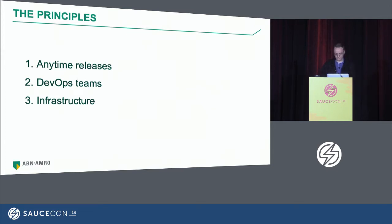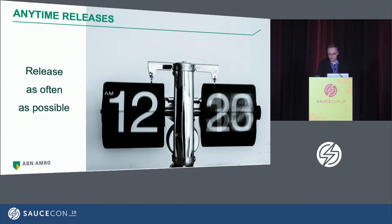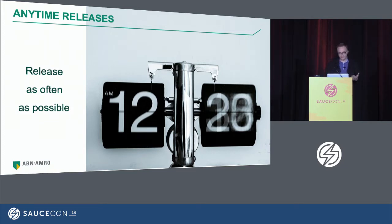The principles I'm going to focus on are anytime release, DevOps teams, and infrastructure. As many companies nowadays, we want to release as often as possible. Today, we can release every two weeks, and actually we do, but the reality is that we want to release more often — possibly completely on demand. That is quite complicated because it means release pipelines need to be very tight, and if you want to run tests every time before releasing, that's a lot of testing.